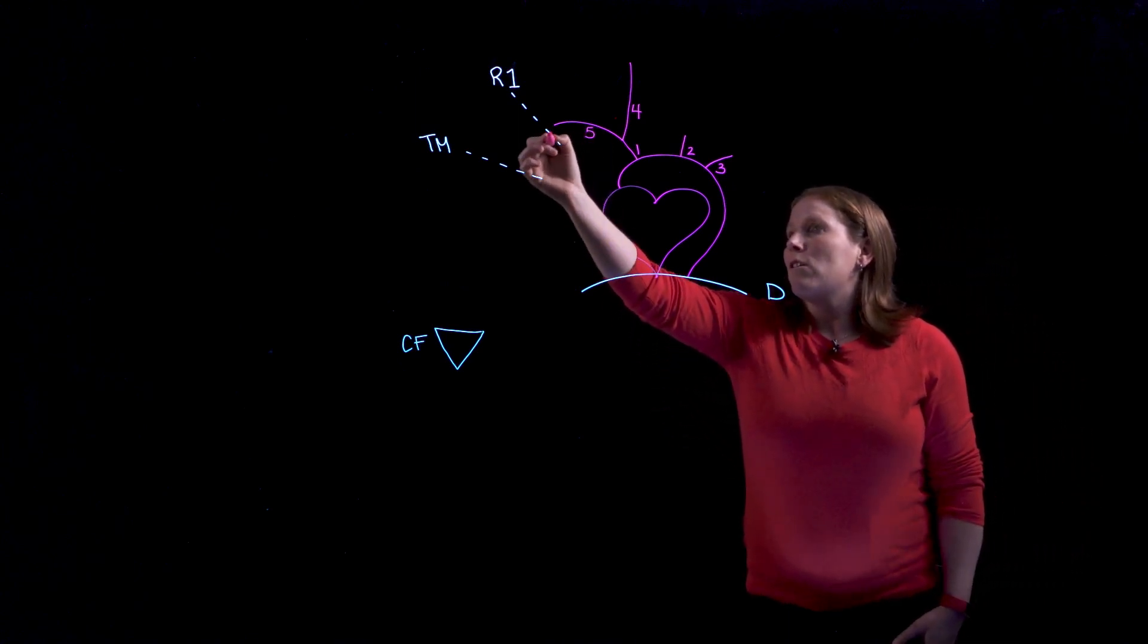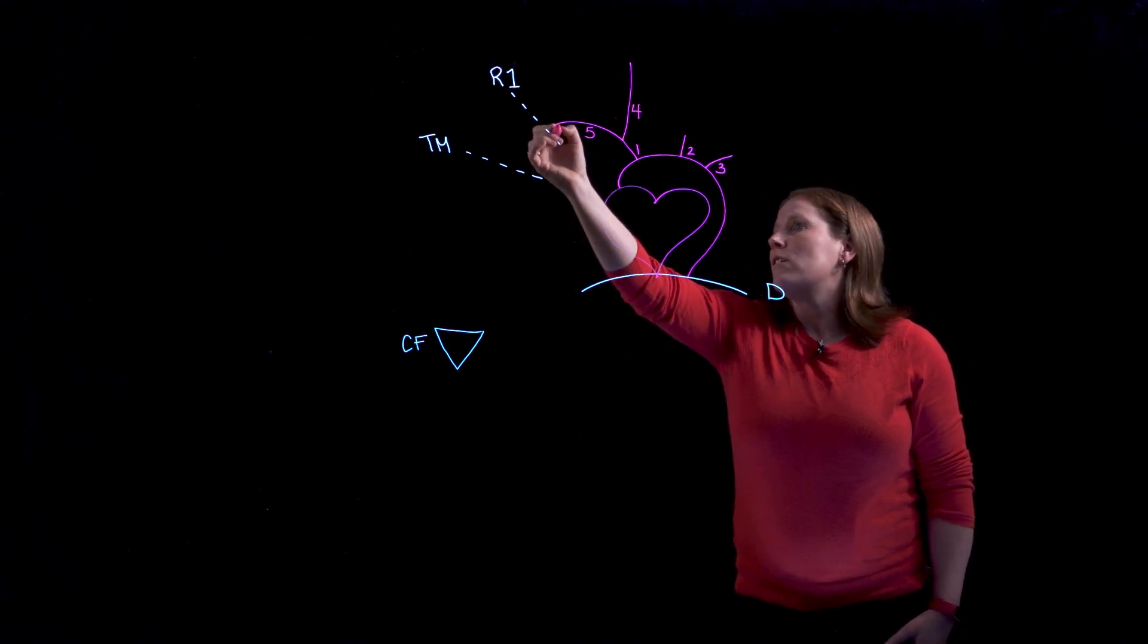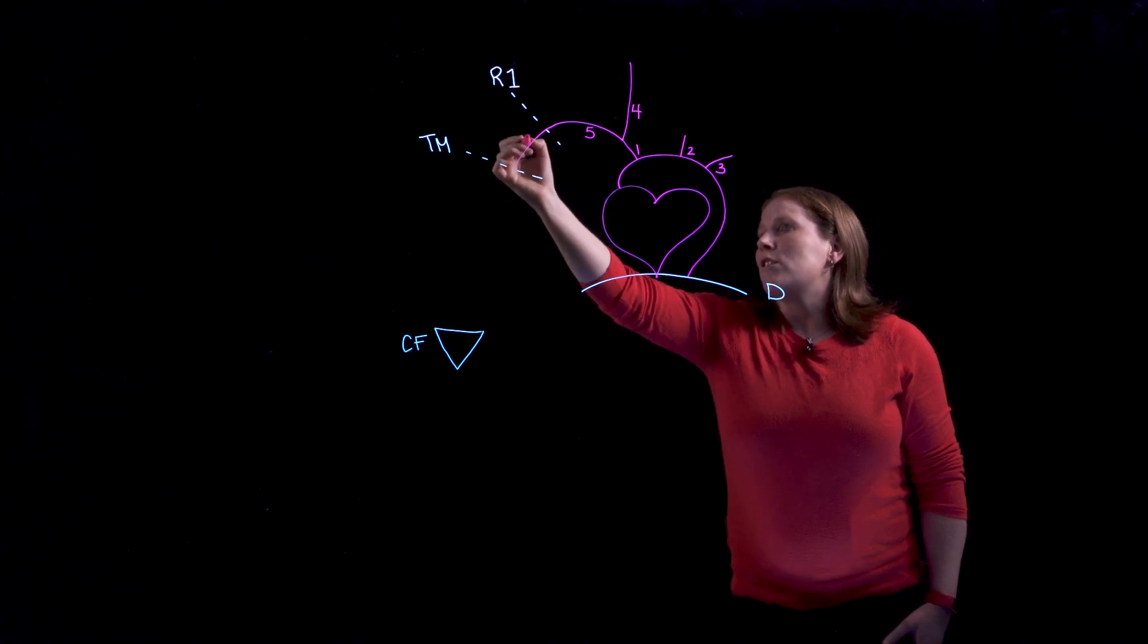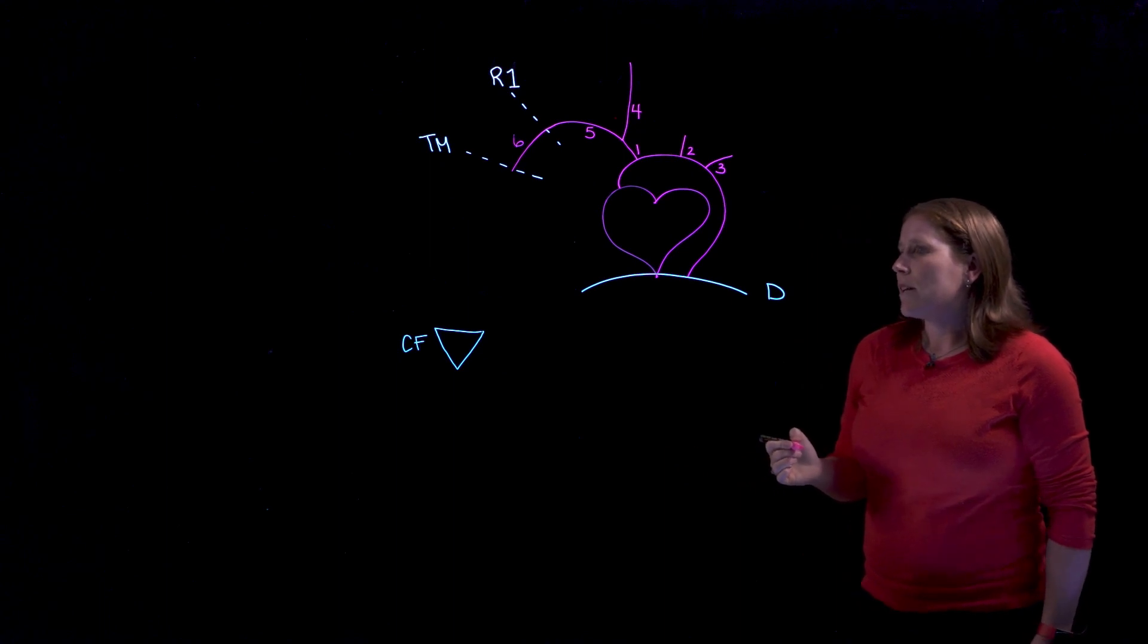If we continue to follow our subclavian artery on this side and everything is going to be symmetrical, as the subclavian artery passes rib one it's going to change names and so now we're going to call this the axillary artery and I'll label that number six.